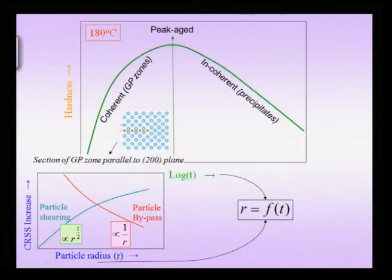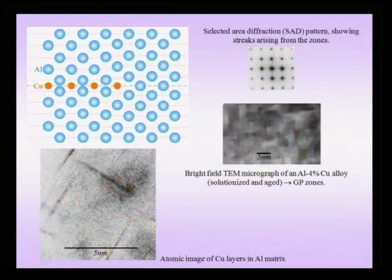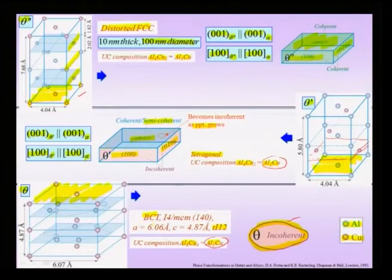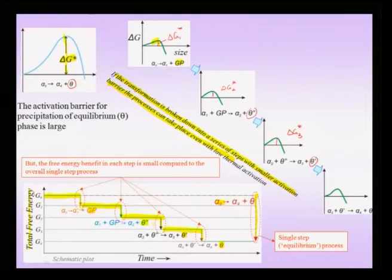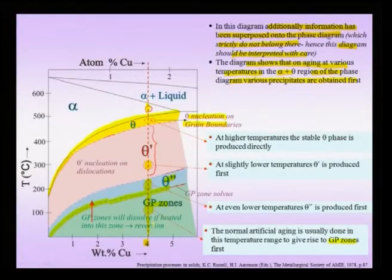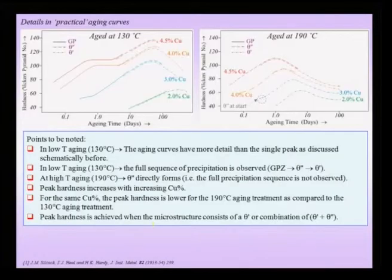The precipitates act as pinning points giving rise to hardening. The particle shearing mechanism increases with particle size, while the stress required for the particle bypass mechanism decreases with size — because when the volume fraction is constant and precipitate size increases, the inter-precipitate distance also increases.